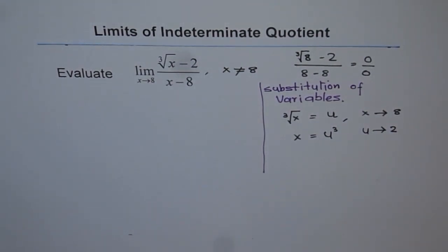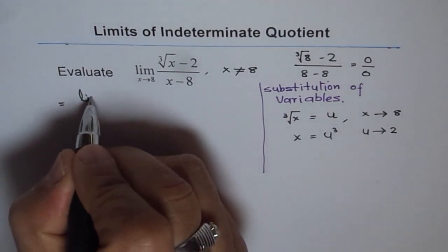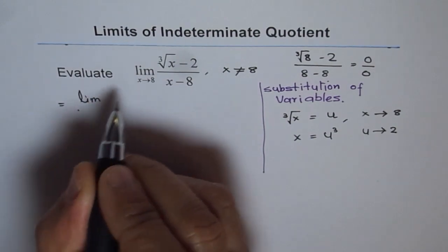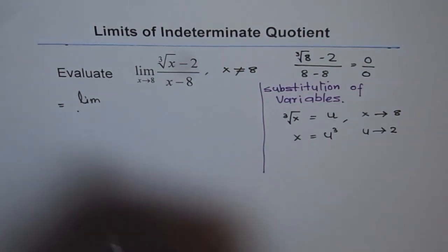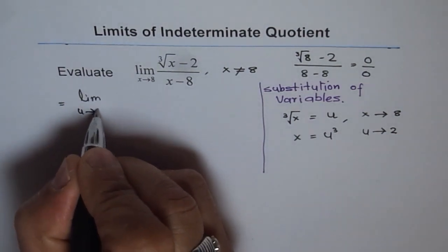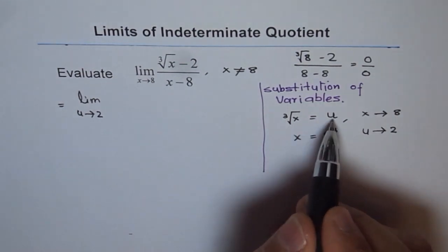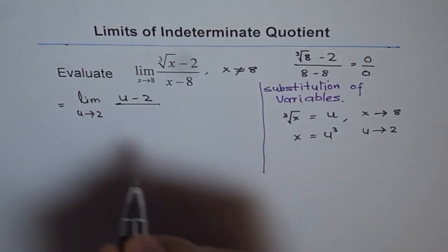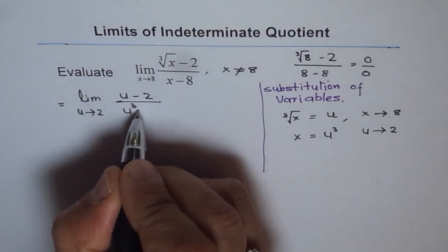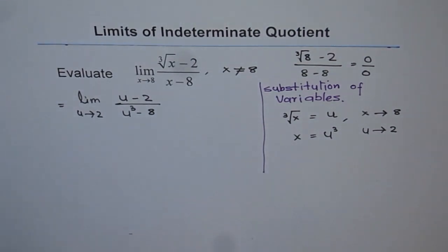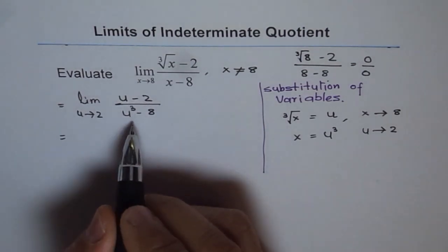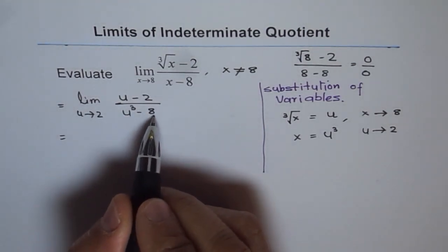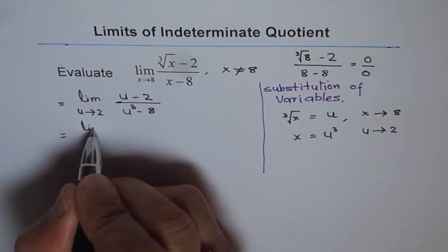These are the substitutions we will make in our expression and then simplify it. We can write our expression as: limit as u approaches 2 of u minus 2 in the numerator, and u cubed minus 8 in the denominator. Now we have a cube minus b cube in the denominator, which can be factored very easily.